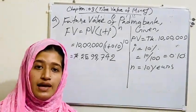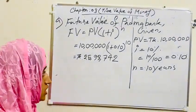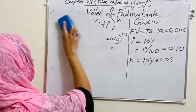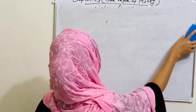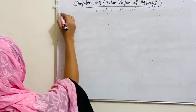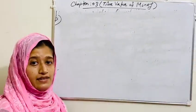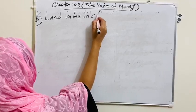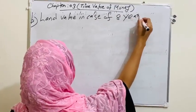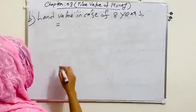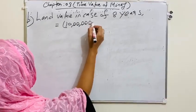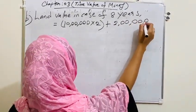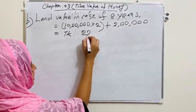Now we will have to analyze Mr. Farhad's investment decisions, which is we have to analyze both the projects for 8 years. So requirement B is, first one is land value in case of 8 years.